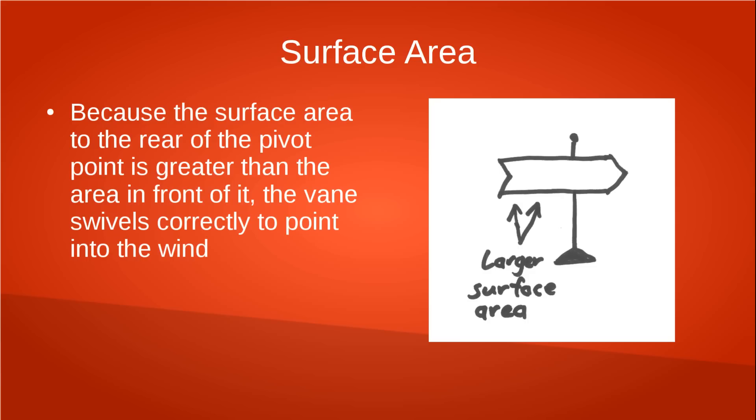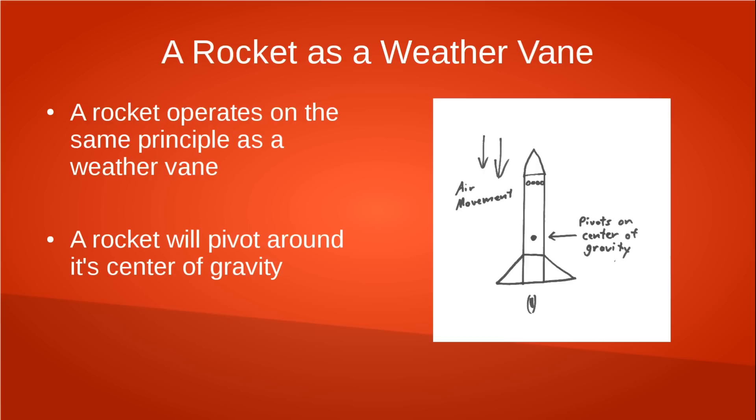Here again is the side view. For a weather vane to work, there must always be more surface area to the rear of the pivot point than in front of it. A model rocket works on exactly the same principle. In order to make a model rocket stable, you need to have more surface area to the rear of the pivot point than in front of it. That way, the air moving past it keeps it pointing up instead of turning it around.